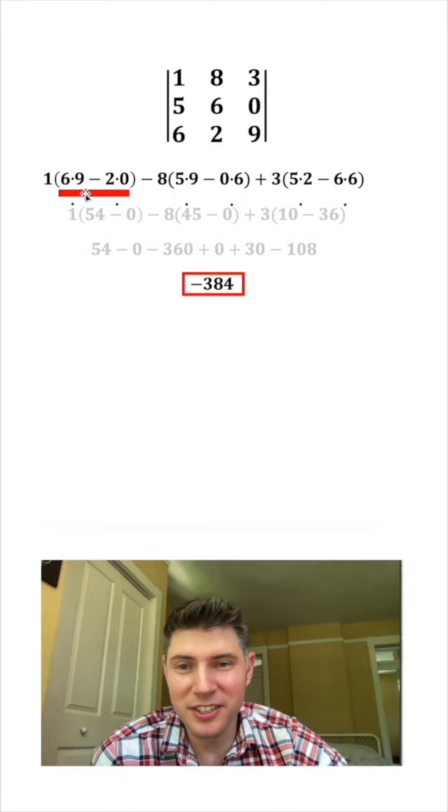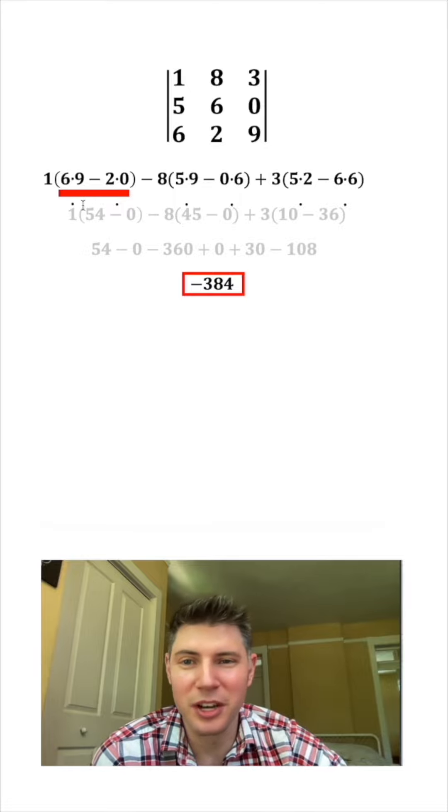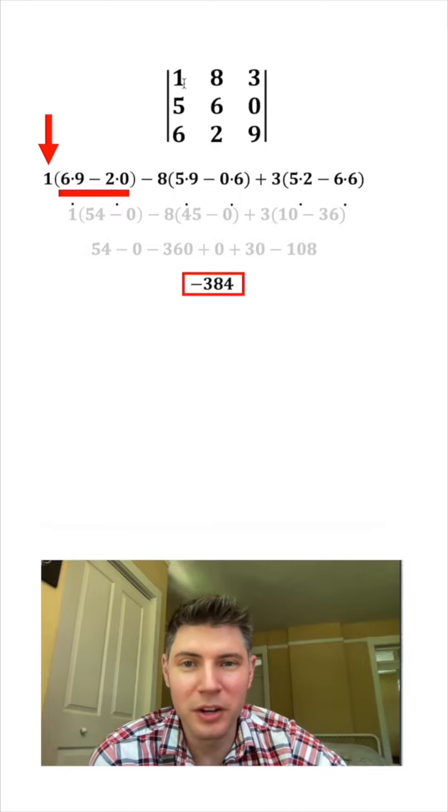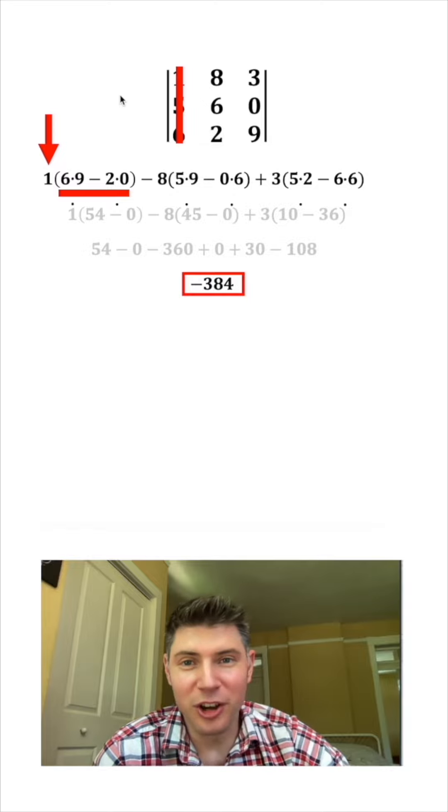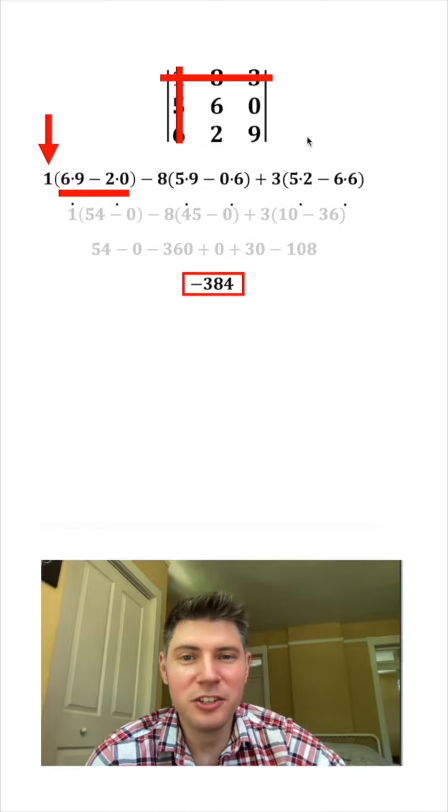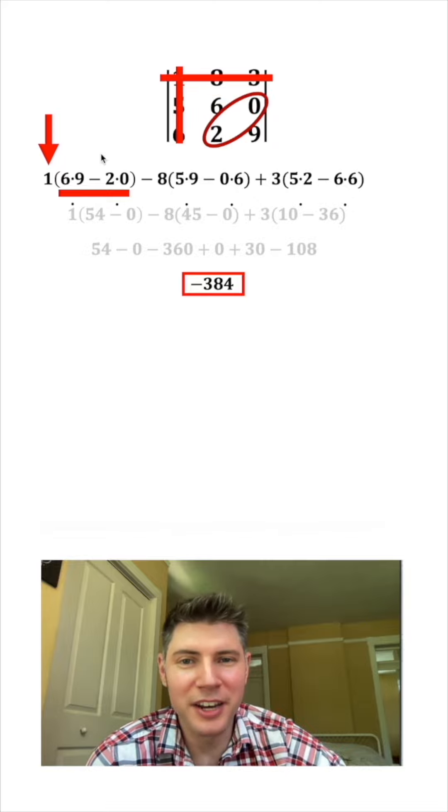So then how do you find this inside stuff here? The six times nine minus two times zero. Take the one, you find the one up here, scratch out the column and the row that contains the one, and then do this diagonal six times nine, which is the six times nine right here, minus the two times zero.